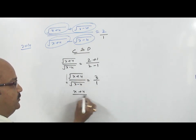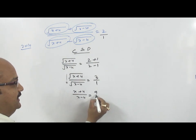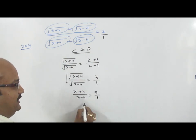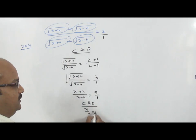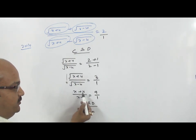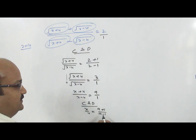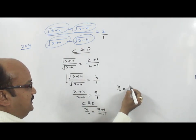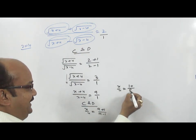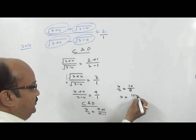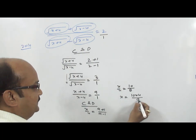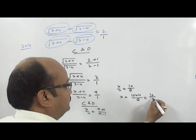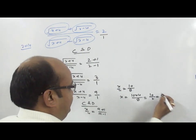We have X plus 4 upon X minus 4 is equal to 9 upon 1. Again, apply C and D. It is numerator and denominator with same values, so: 9 plus 1 upon 9 minus 1. So we have X upon 4 is equal to 10 by 8. Therefore X is equal to 10 into 4 by 8. The answer is 5.